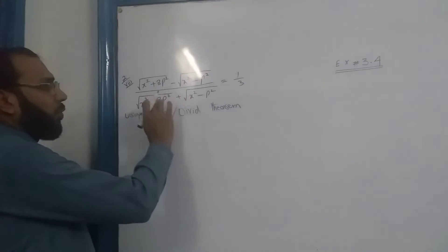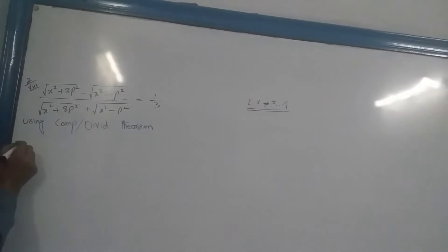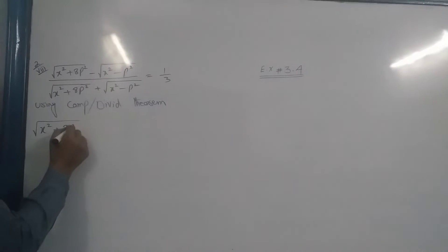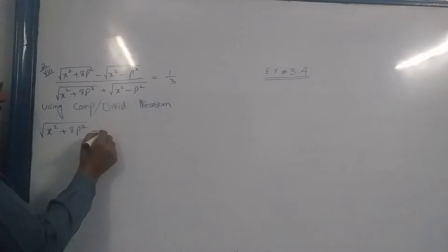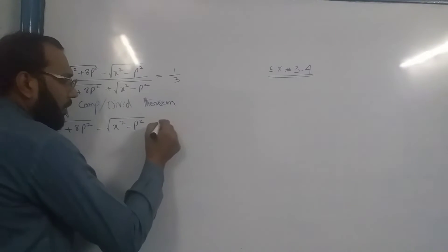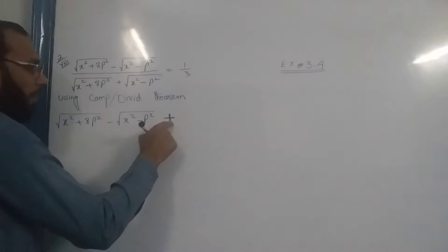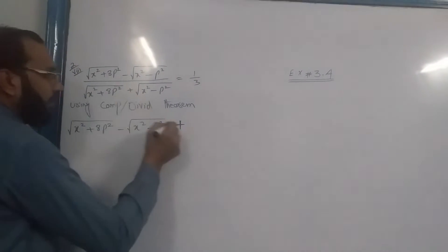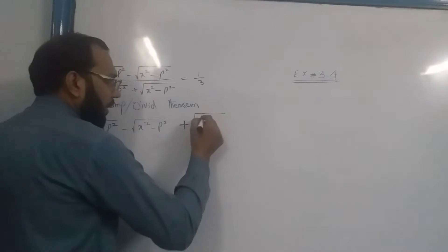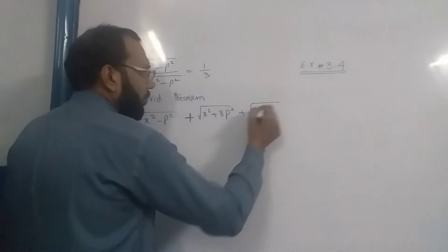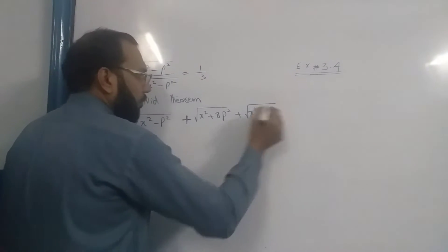The most important thing is to show you how to use componendo dividendo theorem. We have square root of (x² + 8t²) minus square root of (x² - t²). This is componendo. Adding the sign from the initial value: square root of (x² + 8t²) plus square root of (x² - t²).